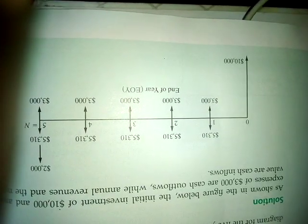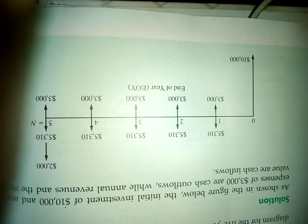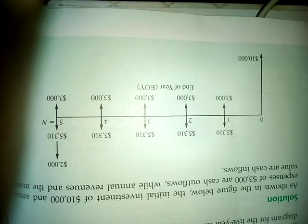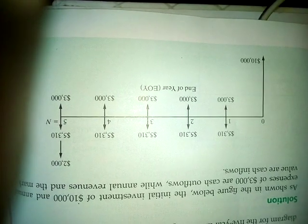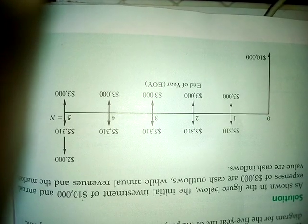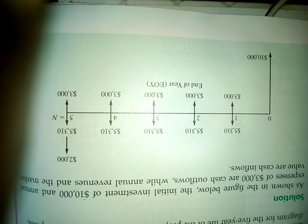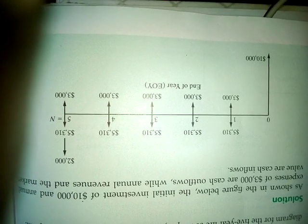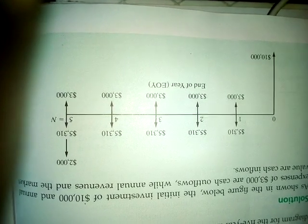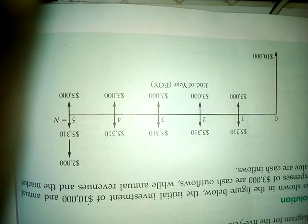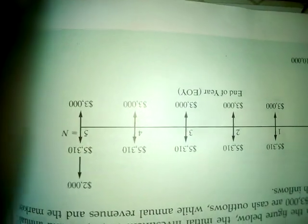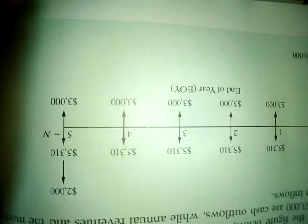Looking at the diagram, you see the ten thousand dollars is plotted downward at year zero, since it is an investment. The company is spending money, so we plot it downward. You see the ten thousand dollar arrow plotted down below the zero line.